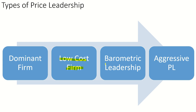The fourth type is aggressive price leadership, which is opposite to barometric price leadership. It is an autocratic form of price leadership where the big firm in an industry fixes the price by considering only their own profit and interest, and the other firms unwillingly accept that price. To summarize: dominant means the firm with maximum market share; low-cost means the firm producing at lowest cost; barometric is democratic; and aggressive is autocratic price leadership.